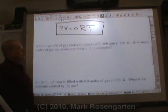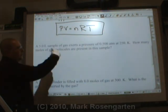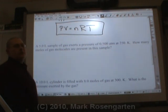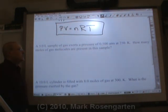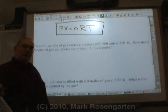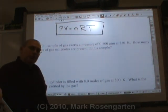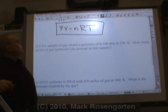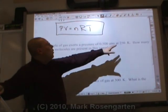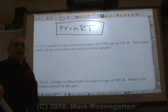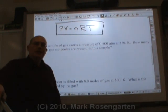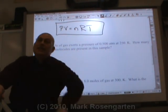A 5.0 liter sample of gas exerts a pressure of 0.500 atmospheres at 250 Kelvin. How many moles of gas molecules are present in this sample? So how do we know we need pivnert for this and not P1V1 over T1? Two ways. Notice we're only given one pressure, one temperature, and one volume.